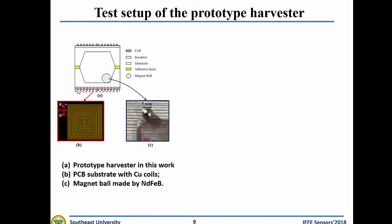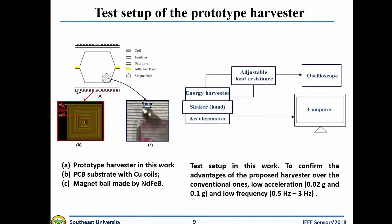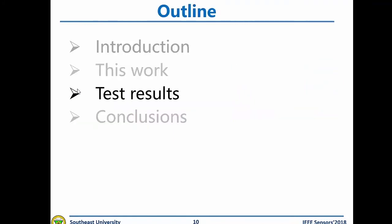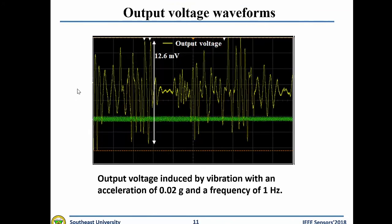To confirm these advantages, a prototype has been prepared. A PCB with copper coils on the surface is used as the substrate. This picture shows the magnet ball made of permanent magnet. The setup uses hand movement to create vibration conditions, and the acceleration is measured and recorded using an accelerometer connected to a computer. Low accelerations and low frequencies are used to confirm the advantages over conventional harvesters, and the output voltage under various load resistances is recorded using an oscilloscope.